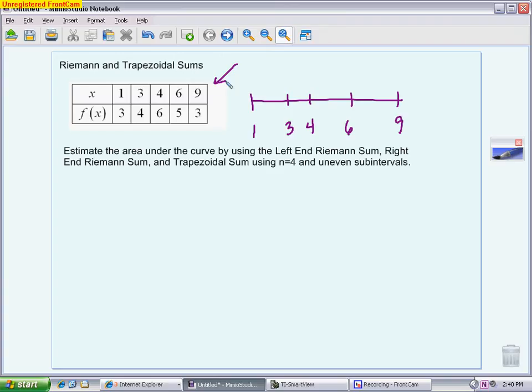We are using the f(x) values to determine the height of each rectangle. We're going to have three answers for this problem: a left-end answer, a right-end answer, and a trapezoidal answer. A lot of times we call them L, R, and T. What you'll notice is they are uneven subintervals, so we have to look at each rectangle or each trapezoid separately.